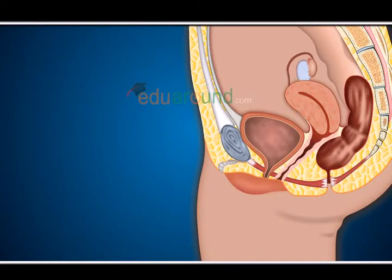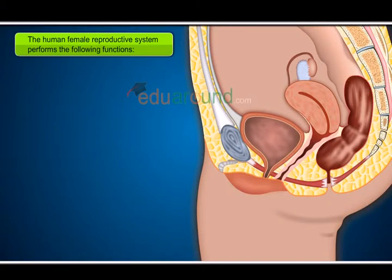Functions of the female reproductive system. The human female reproductive system performs the following functions.